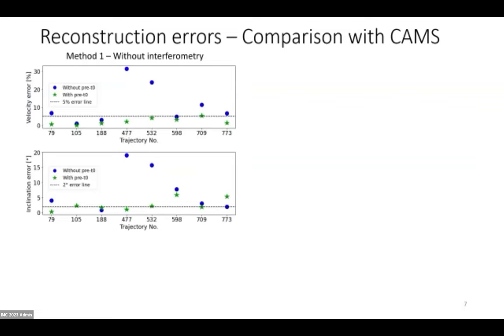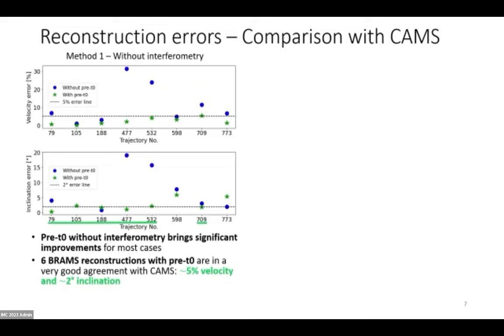Finally, the results. What I show here is the difference between our reconstruction and optical reconstructions coming from the CAMS network, first without interferometry. What we see here is the difference in terms of velocity, and at the bottom the difference in terms of inclination. What we observe is that adding pre-zero phase information brings significant improvements. This is valid for most cases. For instance, if you look at this trajectory here, we've won more than an order of magnitude of accuracy, which is very good. Overall, we have very good agreement in most cases. The only cases which show some difficulty are the ones with the highest speeds, which is not surprising because they are more difficult to get accurate time delays.